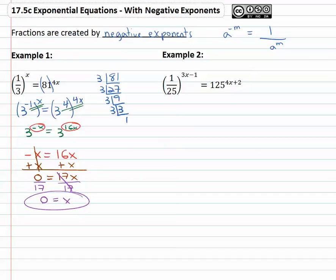Let's try one more example that might be a little more involved. In example two here, we see one over twenty five to the three x minus one equals one twenty five to the four x plus two.